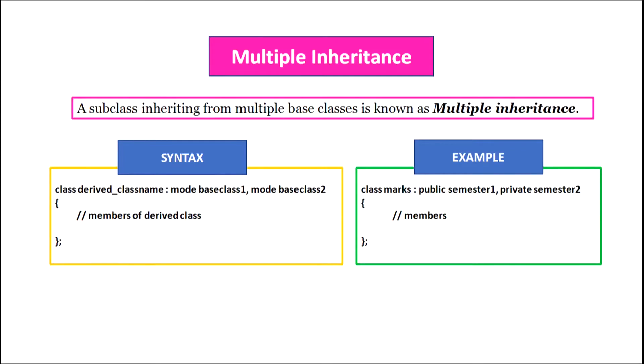Multiple inheritance: a subclass inheriting from multiple base classes is known as multiple inheritance. The syntax is: class DerivedClassName colon visibility_mode BaseClass1 comma visibility_mode BaseClass2, then the body of the child class. For example, class Marx inheriting from two classes would be written as: class Marx colon public Semester1 comma private Semester2. This means class Marx inherits from Semester1 publicly and from Semester2 privately.